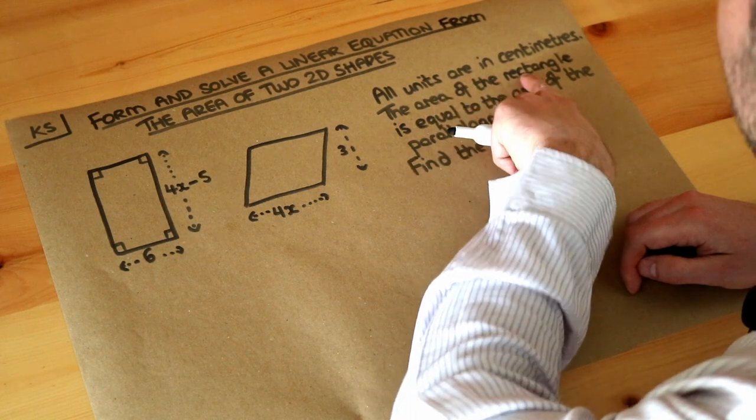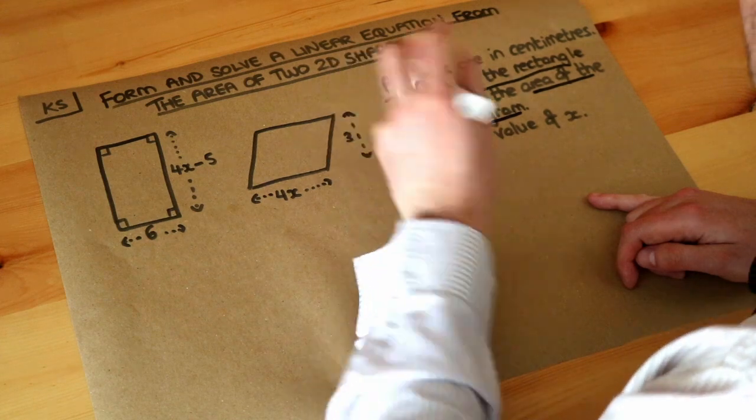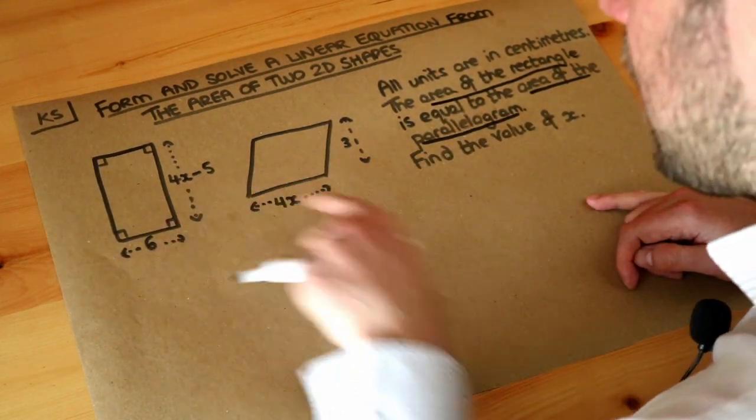Well it's talking about the area of the rectangle and the area of the parallelogram and saying those are equal. So we just need to find the area of each one first.